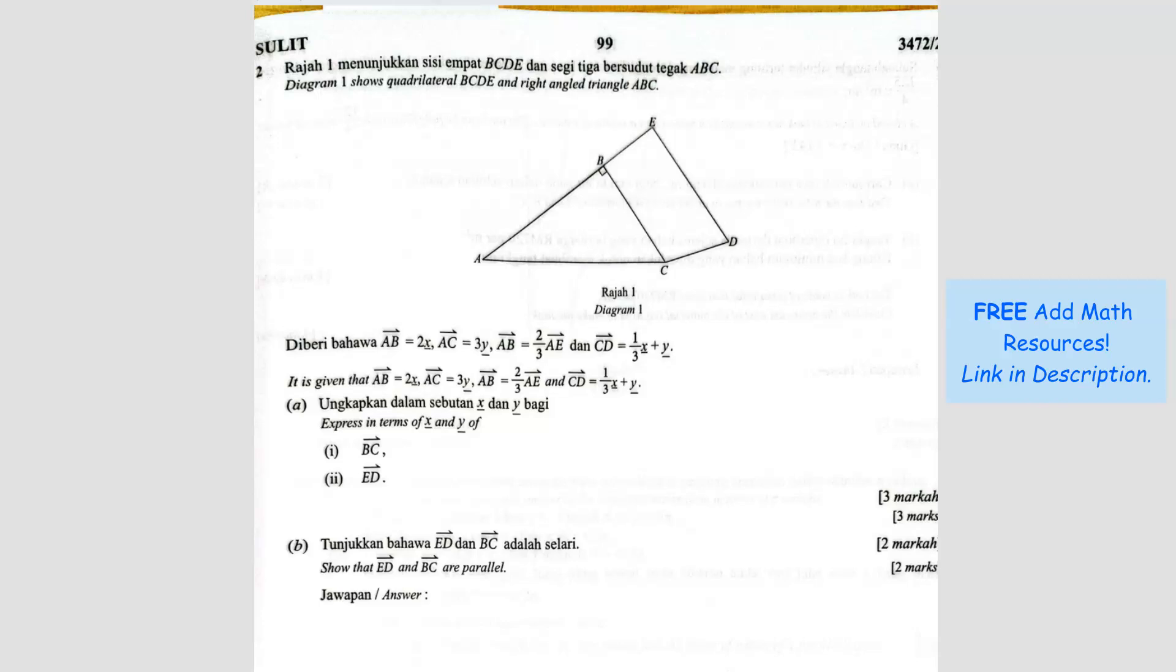Question number 2. Diagram 1 shows quadrilateral BCDE and right angle triangle ABC. It is given that, okay let us label this first.